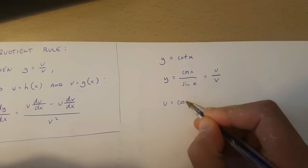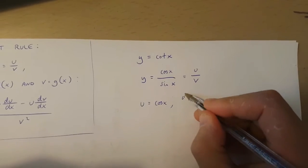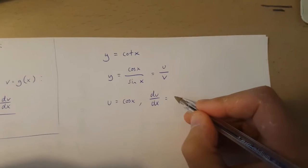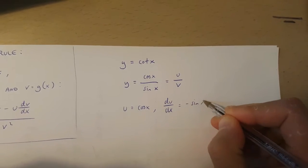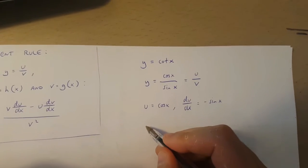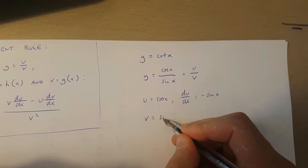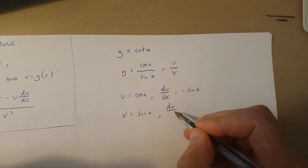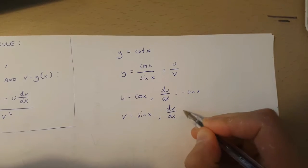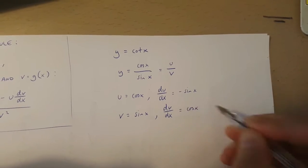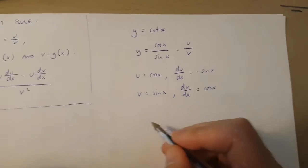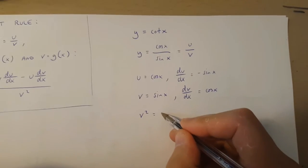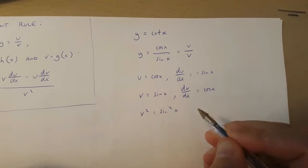Now if u is cos x, then du over dx is going to be equal to minus sin x. If v is sin x, then dv over dx is going to be equal to cos x. And v squared is going to be sin x squared.